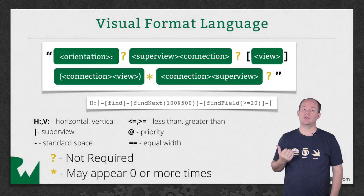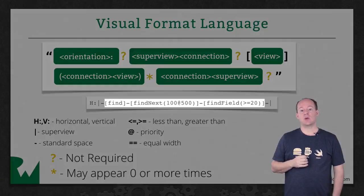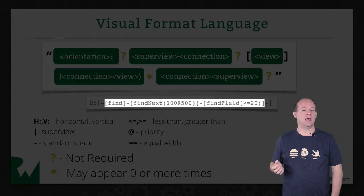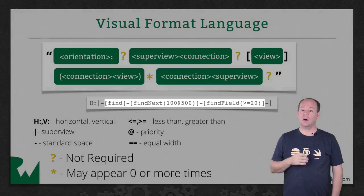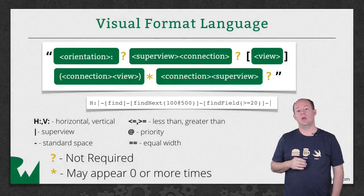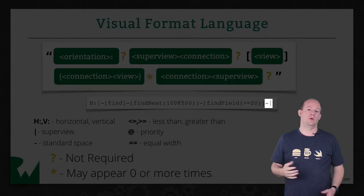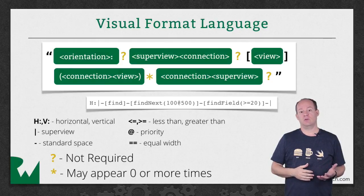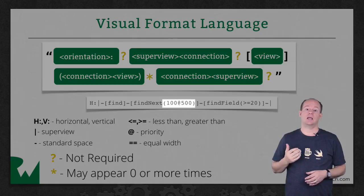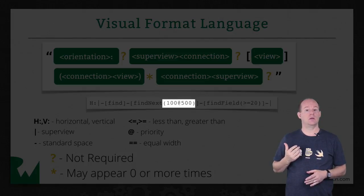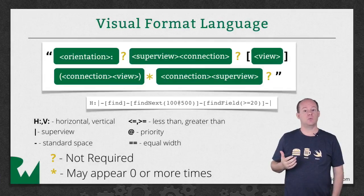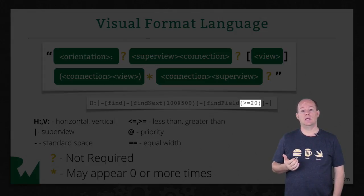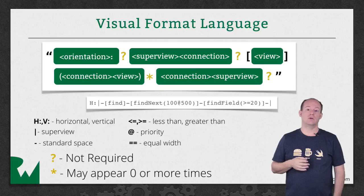This string represents three views — find, find next, and find field — all with standard spacing between them and from them to the super view. The numbers in parentheses after a view represent the width of the view. So find next has a width constraint of 100 with a priority of 500, and find field has a width greater than or equal to 20. If this were a vertical string, those numbers would represent height and not width.